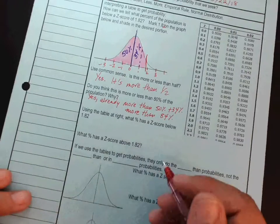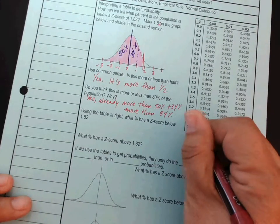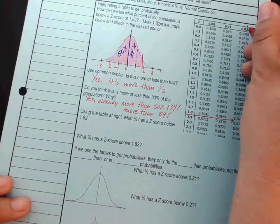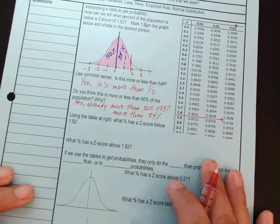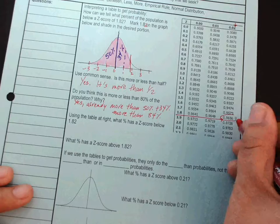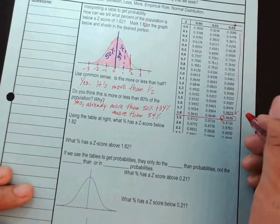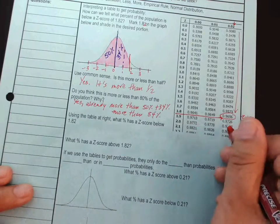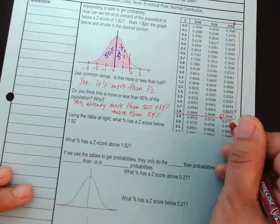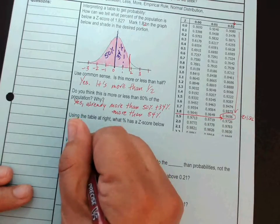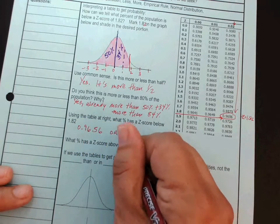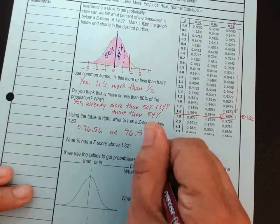Well, if the z-score is 1.82, we start on the 1.8 line, and we go until we get to the 2 part, so your hundredths place right there. So, my answer is, that's my z-score, z is 1.82. So, that's a fraction. So, it's 0.9656, or, if you like percentages better, 96.56%.